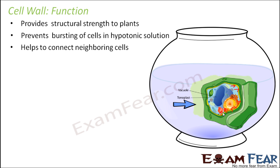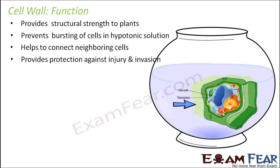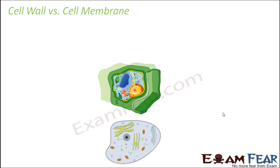The cell wall also helps to connect neighboring cells through the presence of tiny holes called plasmodesmata. Additionally, it provides protection against injury and invasion, since it is a rigid, tough layer that acts as an additional protective barrier.